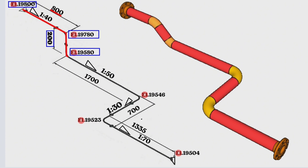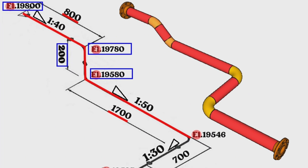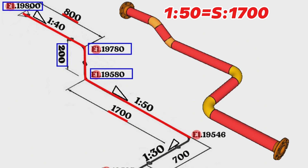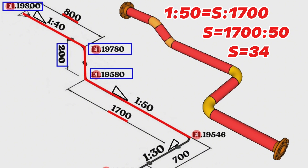Then the pipeline turns with a 45-degree elbow to the south direction and travels for a length of 1,700 millimeters. The slope symbol ratio in this part of the pipeline is 1:50, meaning that for every 1 unit of vertical elevation there are 50 units of horizontal distance. 1:50 equals S over 1,700, or S equals 1,700 divided by 50. Calculated and found S equals 34 millimeters. This means the height of the pipeline drops by 34 millimeters over a distance of 1,700 millimeters.